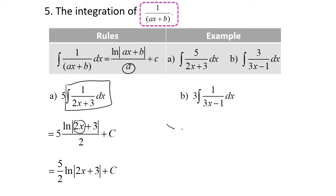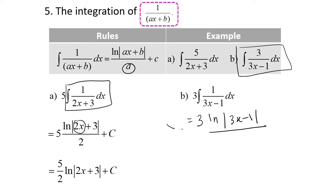Next, for part B, when we integrate 3 over 3x minus 1 dx, first we have to factorize 3 outside the integral. And then it is equal to 3 times ln|3x minus 1| over 3 plus c. Then 3 over 3 here will be 1, so ln|3x minus 1| plus c.